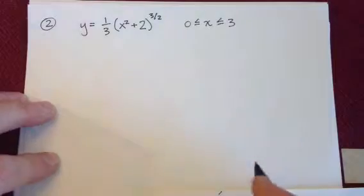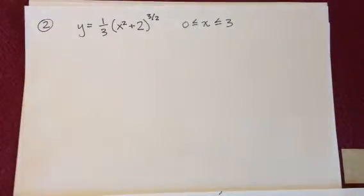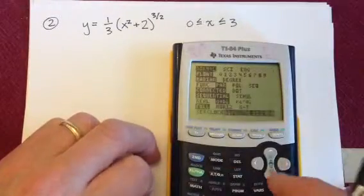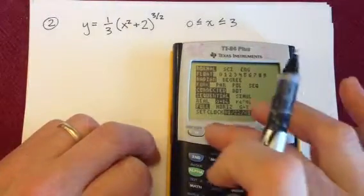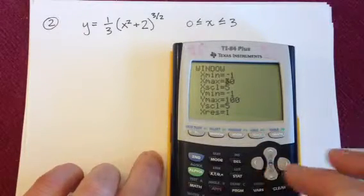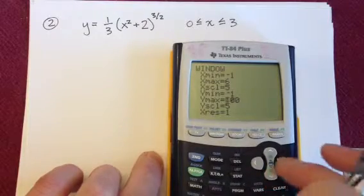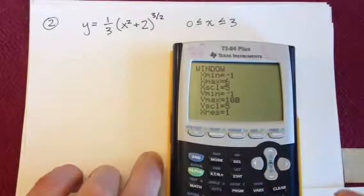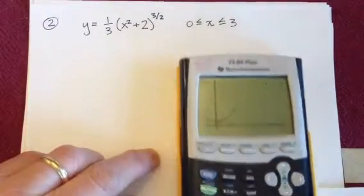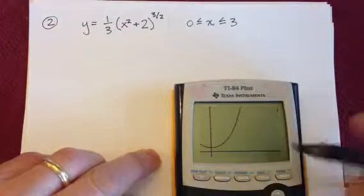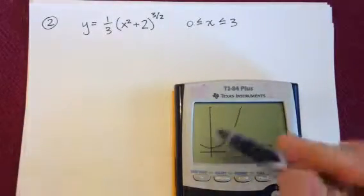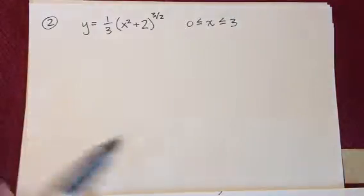This one, I think I can graph this quickly. Change mode down to function mode, I type this one in. Our window, we are not going up that high, we're going up to about 6. Let's see if we can get this. Here is our graph of this function, and we're going from 0 to 3, I think that's about 3 out there. So we can see that it is a curve that should be manageable.